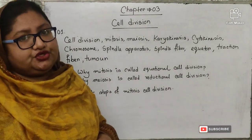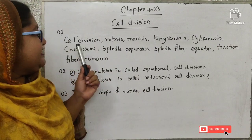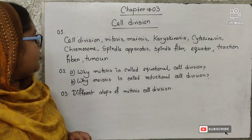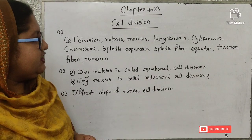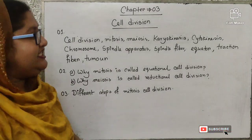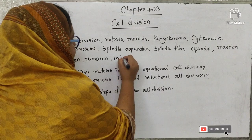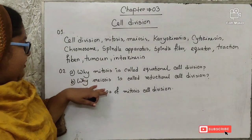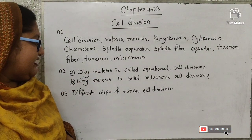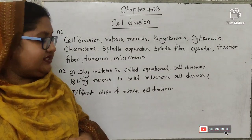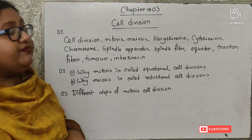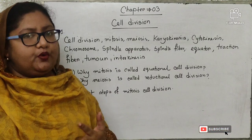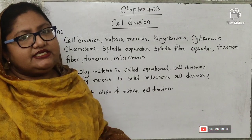From today's lecture, we will learn the definitions of cell division, mitosis, meiosis, cariokinesis, cytokinesis, chromosome, spindle apparatus, spindle fiber, equator, traction fiber, tumor, and interkinesis. You will also be able to learn why mitosis is called equational cell division, why meiosis is called reductional cell division, and the different steps of mitosis — prophase, prometaphase, metaphase, anaphase, and telophase.